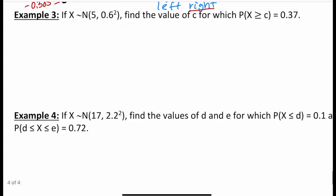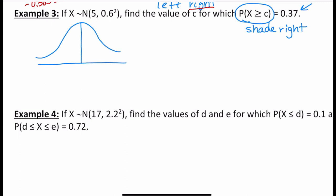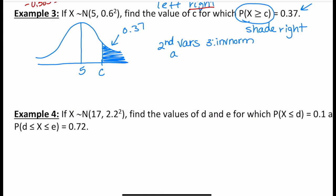Example number three: x is normally distributed with mean 5 and standard deviation 0.6. Find the value of c for which the probability of x greater than or equal to c equals 0.37. Since it's greater than or equal to, I'm shading to the right, and 0.37 is less than half. So c is to the right of the mean — shading to the right gives an area of 0.37. Go to second vars, option 3, inverse norm: area 0.37, mean 5, standard deviation 0.6, right tail.